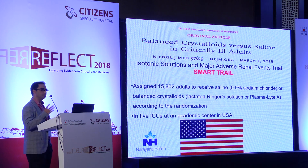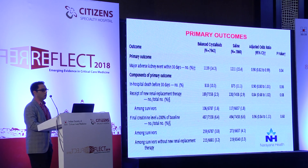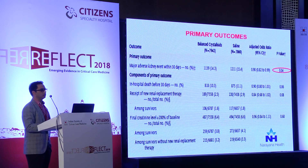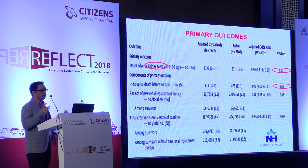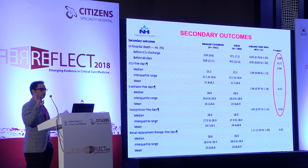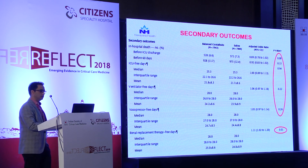Two more trials: the SMART trial enrolled around 15,000 patients in 5 ICUs across the United States, comparing normal saline versus Ringer lactate or Plasmalyte. There was a statistically significant difference in major adverse kidney events favoring balanced crystalloids over saline. There was no statistically significant difference in mortality — the p-value was 0.06 rather than the threshold of 0.05. None of the secondary outcomes like in-hospital death, ICU-free days, or ventilator-free days reached significance. However, renal replacement therapy-free days did show a statistically significant difference between the two groups.